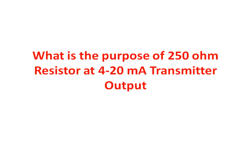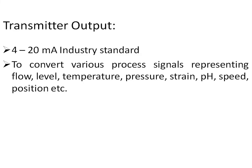In this video I will discuss the purpose of the 250 ohm resistor at the output of a 4 to 20 milliampere transmitter, or at the input of the receiver. 4 to 20 milliampere is commonly used as the output for a transmitter or transducer because it has the advantage of long signal transmission and high noise immunity. Various process signals representing flow, level, temperature, pressure, strain, pH, etc. can be converted into a 4 to 20 milliampere signal.